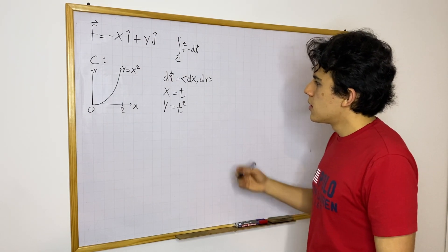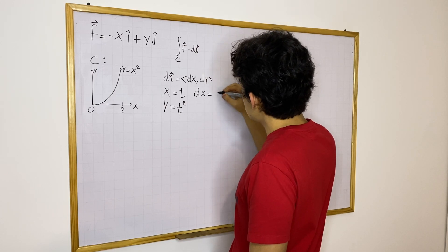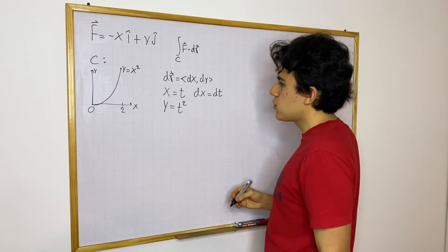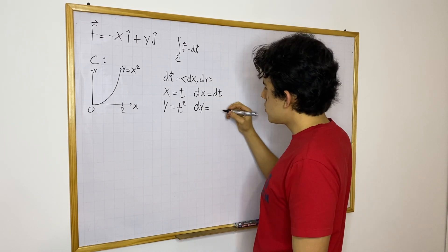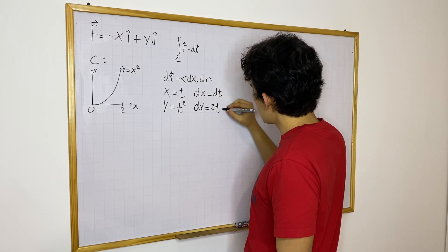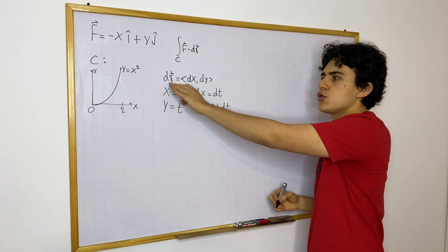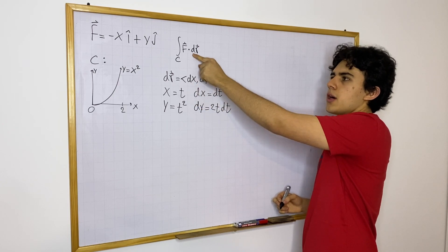So then we have the following, dx will be equal to dt. So here I'm just differentiating with respect to t, finding the differentials, and then dy will be equal to 2t dt. So this is what we have, right now I am just solving for this, because once I have this, I will plug it in here.